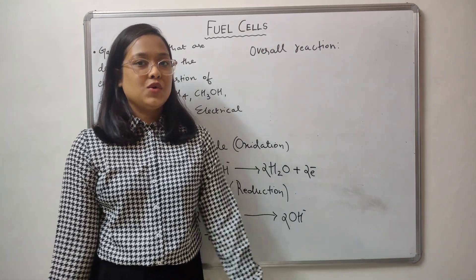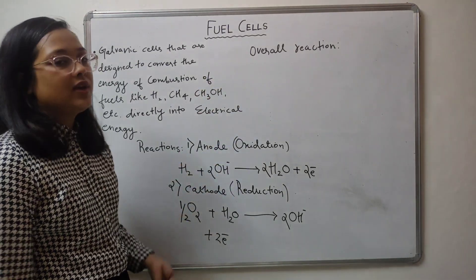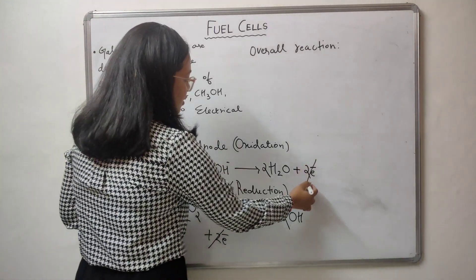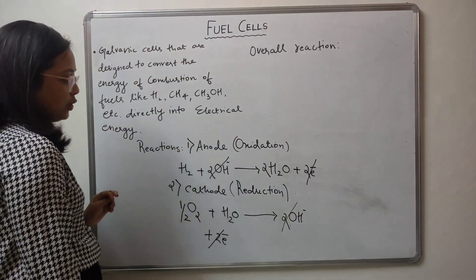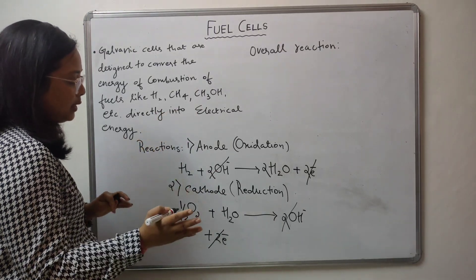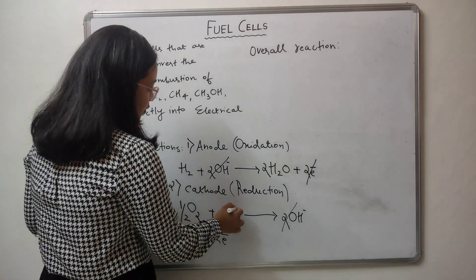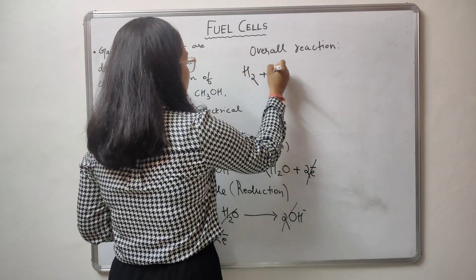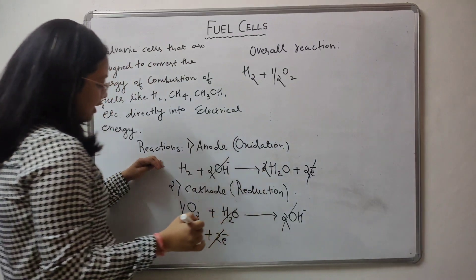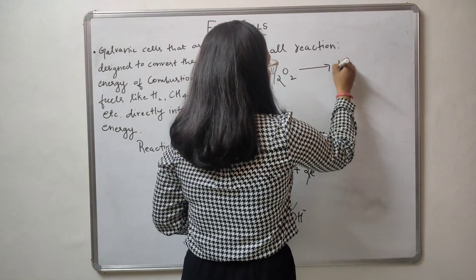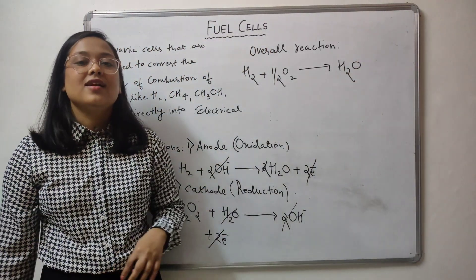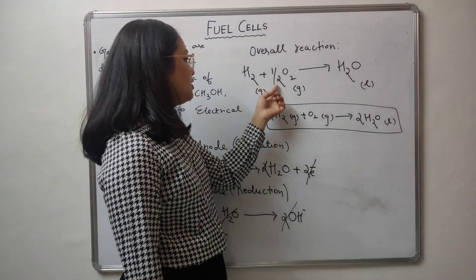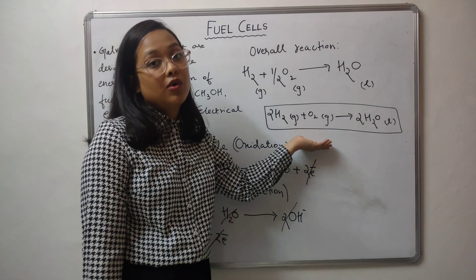The final step is to obtain the overall reaction by combining the two half-cell reactions and cancelling common terms: the electrons cancel, the hydroxide ions cancel, and one water molecule cancels. The overall reaction is H2 + ½O2 → H2O, where H2 and O2 are gases and H2O is liquid. Multiplying by two gives 2H2 + O2 → 2H2O as the final overall H2-O2 fuel cell reaction.